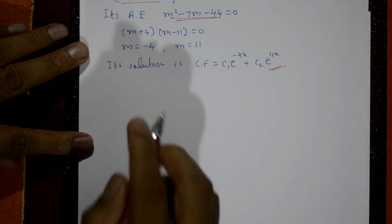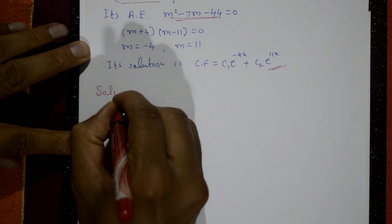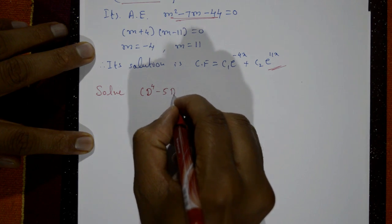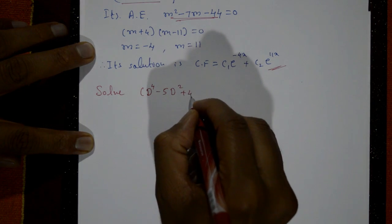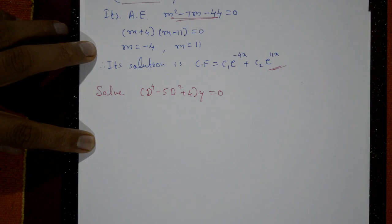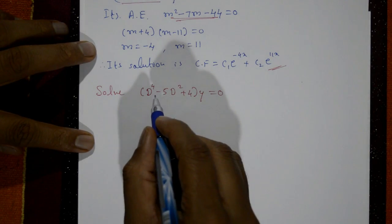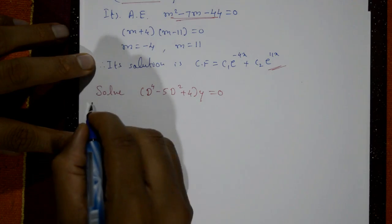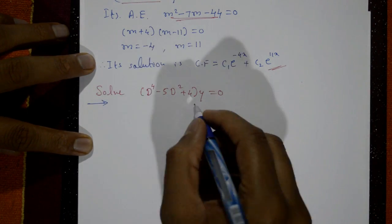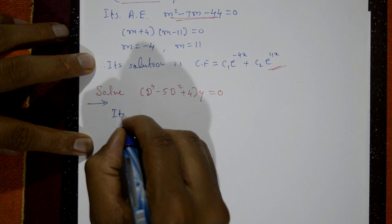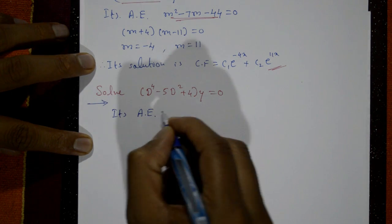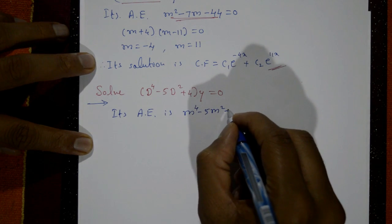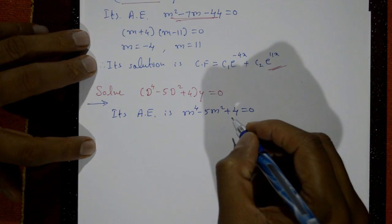Next example: solve d⁴ minus 5d² plus 4 into y equal to 0. Since d is raised to 4, we need four roots. The auxiliary equation is m⁴ minus 5m² plus 4 equal to 0.